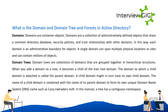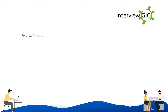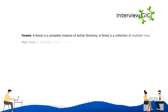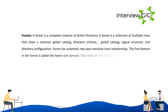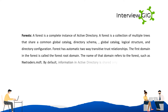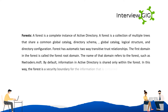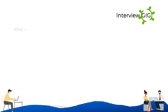In this manner, a tree has a contiguous namespace. A forest is a complete instance of Active Directory — a collection of multiple trees that share a common global catalog, directory schema, logical structure, and directory configuration. A forest has automatic two-way transitive trust relationships. The first domain in the forest is called the forest root domain. By default, information in Active Directory is shared only within the forest, making the forest a security boundary.